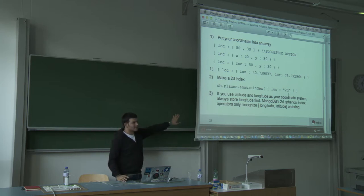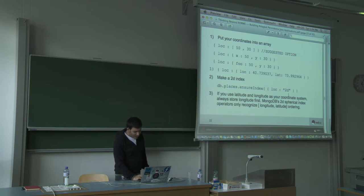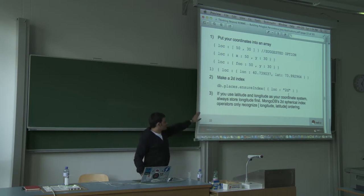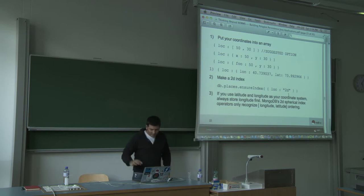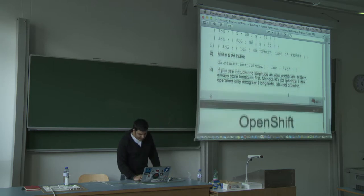One important note: always store longitude first, then latitude in MongoDB for geospatial data — otherwise you may get incorrect results.